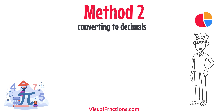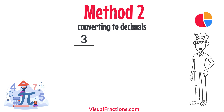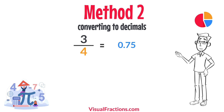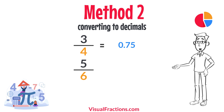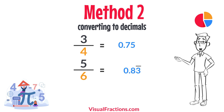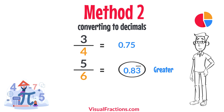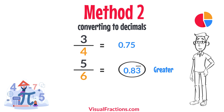For a second method, let's convert each fraction to a decimal. Using a calculator, divide 3 by 4 to get 0.75, and divide 5 by 6 to get 0.83 repeating — meaning the digits 83 continue indefinitely. This quick calculation shows that 0.83 repeating is greater than 0.75, confirming that 5 sixths is indeed greater than 3 quarters.